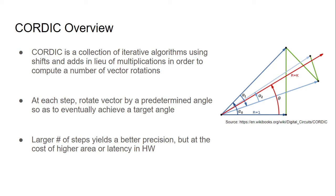So first of all, CORDIC is a collection of iterative algorithms using shifts and adds in lieu of multiplications in order to compute vector rotations. CORDIC algorithms are iterative, which means we don't immediately use multiplications and just solve the equation in one step. We're going to use shifts and adds that give us incomplete solutions step by step, so that we'll eventually approach the correct solution.